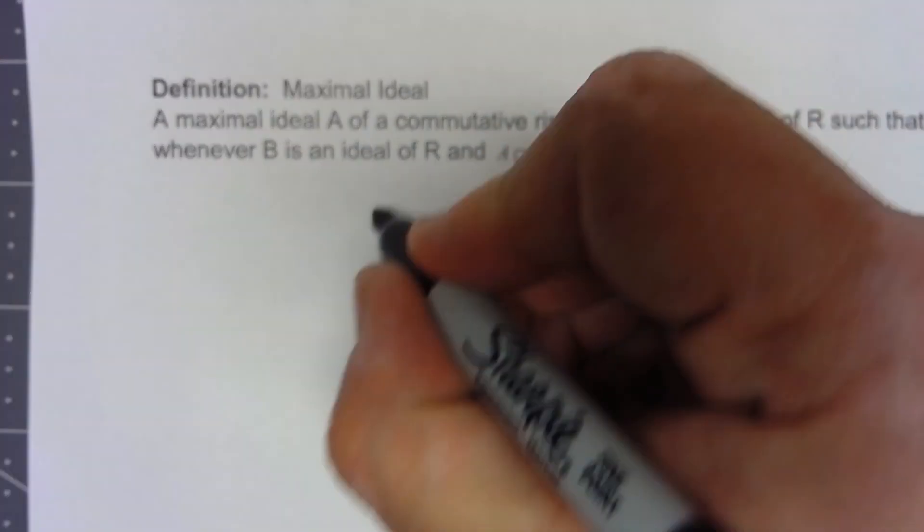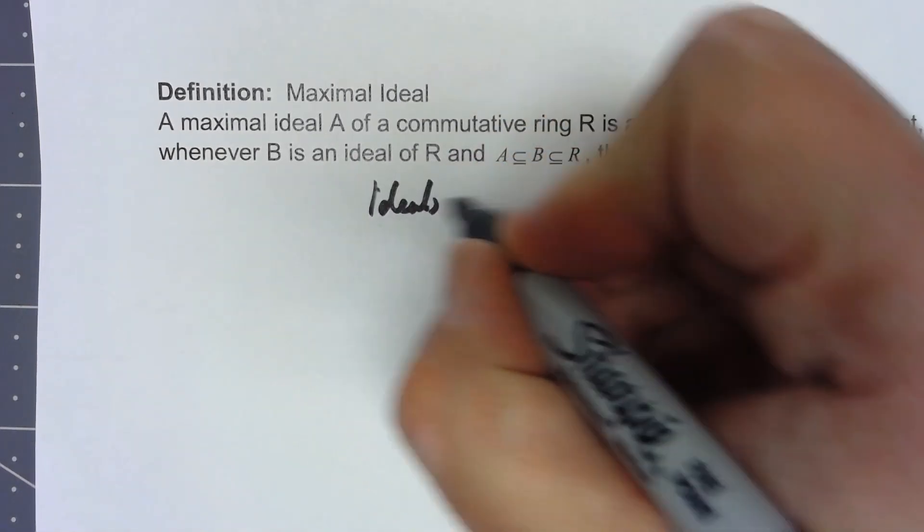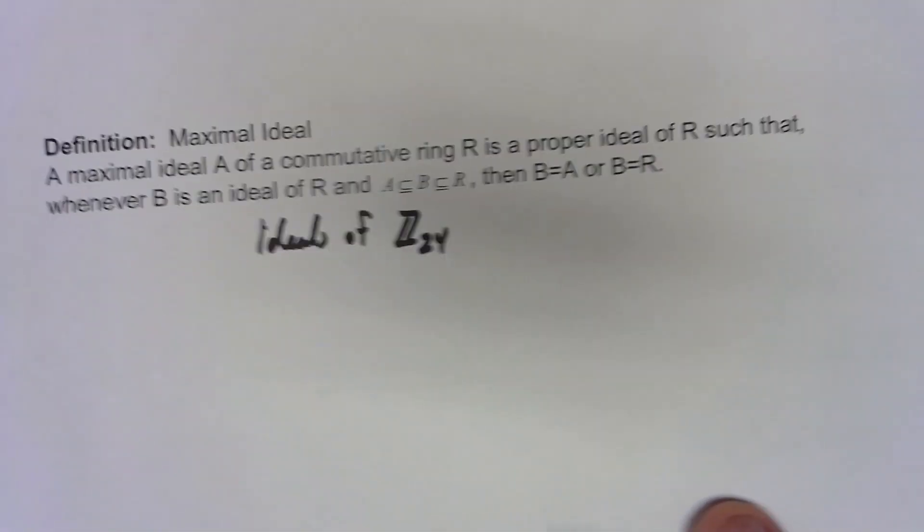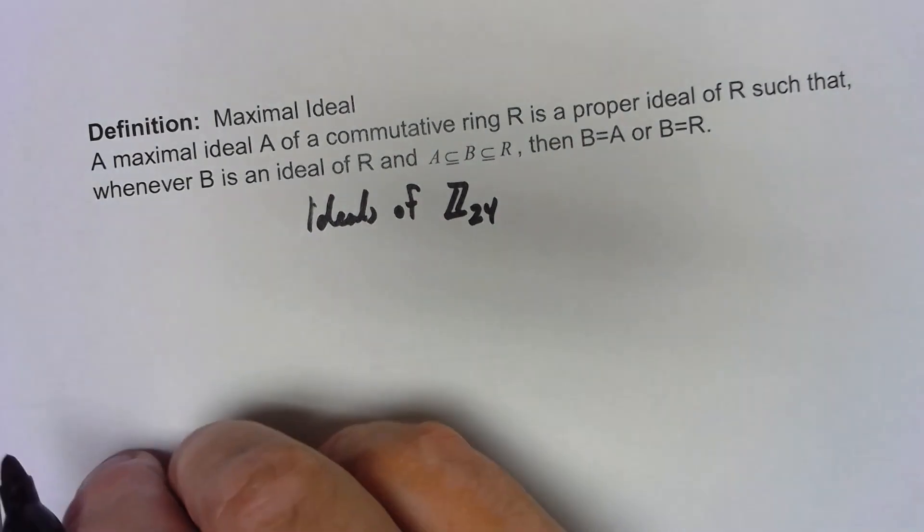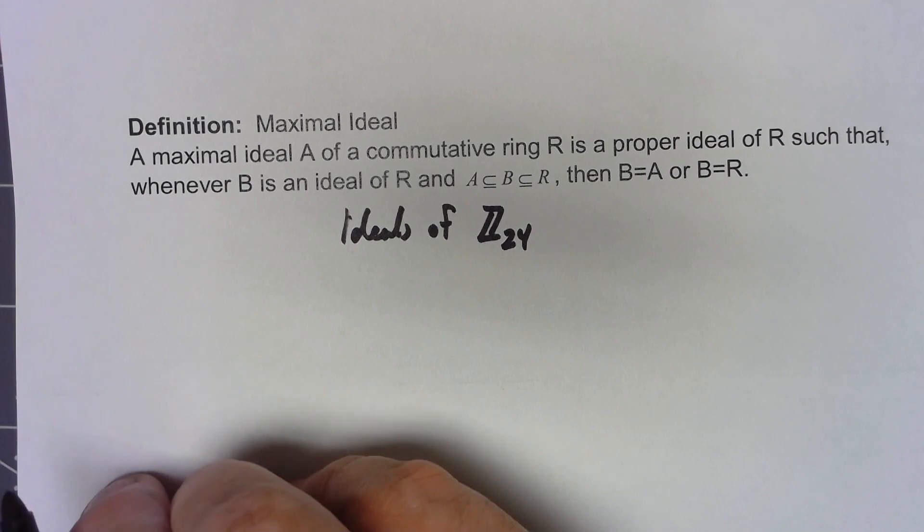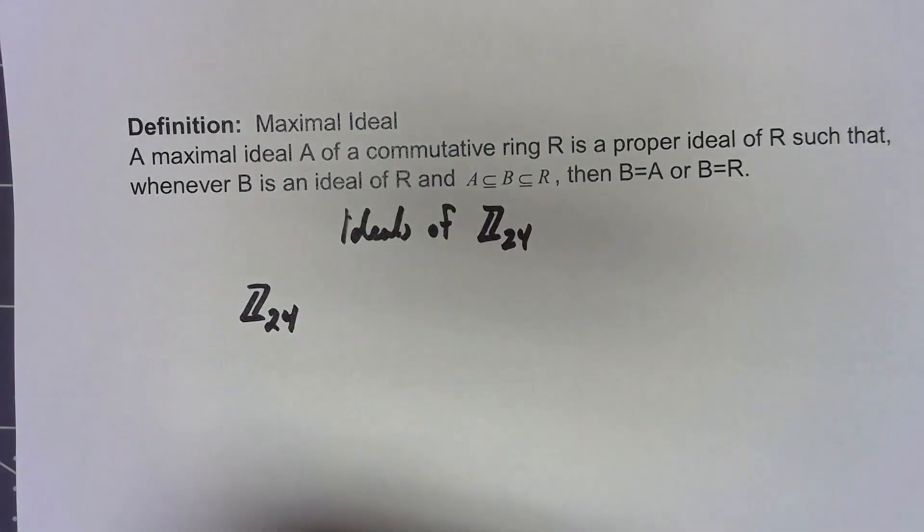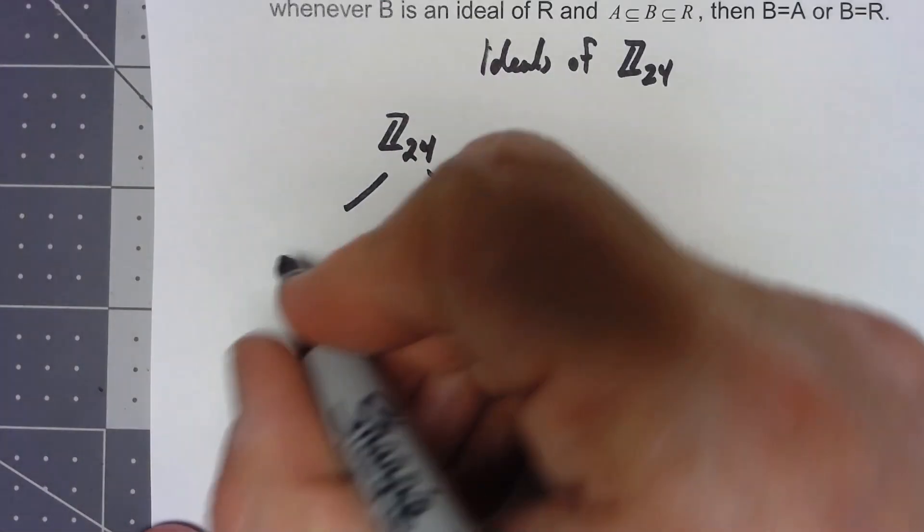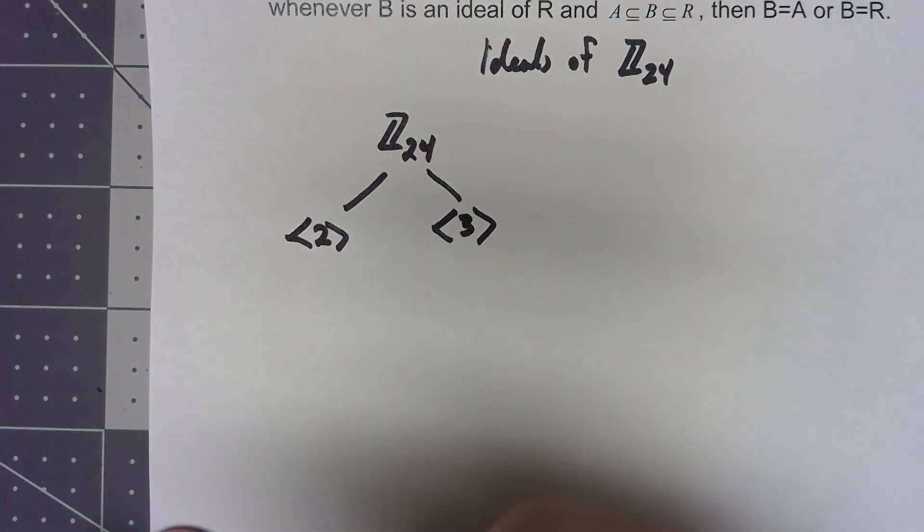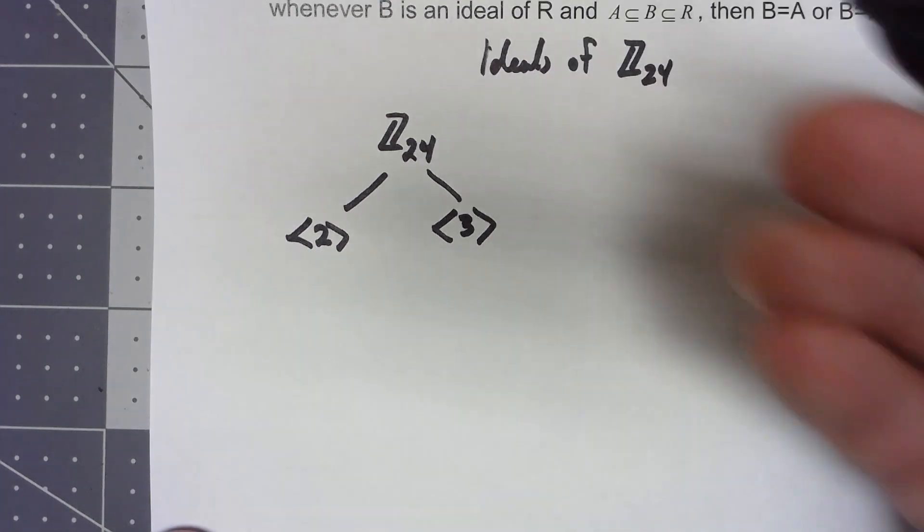For example, let's look at all of the ideals of Z24. We can create a subring lattice just like we did for subgroups. So Z24 has ideals generated by 2 and 3. All these things are going to be the multiples of these things, just in Z24 instead of all of Z.